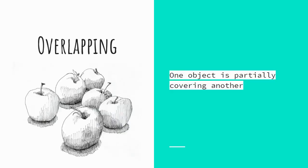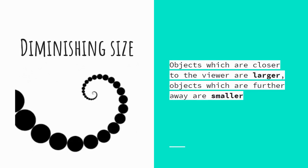You can do overlapping, where one object is in front of the other. See here — this apple does not have any overlapping, which means it is the one closest to us, the viewer. Diminishing size is where some objects are larger and some are smaller; those that are smaller are further away. Which dot is the furthest from us? The smallest dot would be correct.